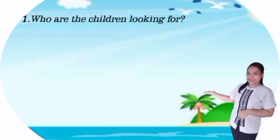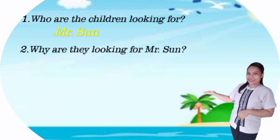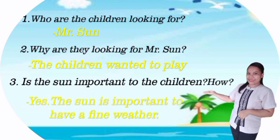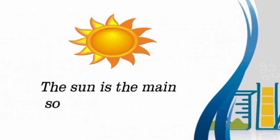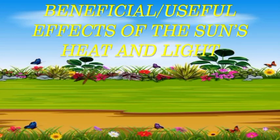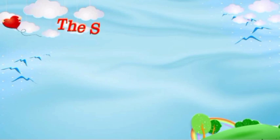Based on the video clip, who are the children looking for? Correct, it's Mr. Sun. Why are they looking for Mr. Sun? Very good, the children wanted to play. Is the sun important to the children? How? Very good, it's yes, the sun is important to have fine weather. The sun is the main source of heat and light. It has beneficial or useful effects to us. However, it has also harmful effects. Now, let us discuss the beneficial effects of sun's heat and light. Are you ready?